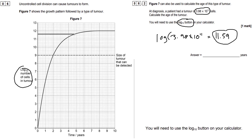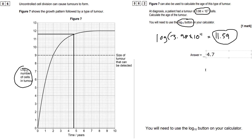Each small square on the graph is worth two units. Drawing the line across from 11.6 and coming down, that looks to be about 4.7. So the tumour age is approximately 4.7 years. That log number essentially tells you the number of zeros after the 1 — nice and easy.